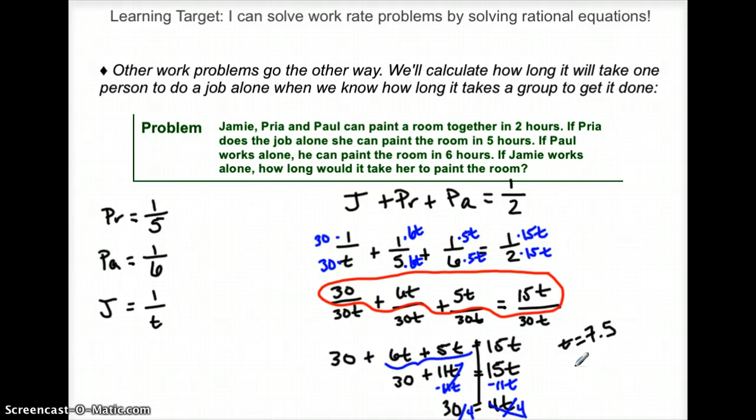So again, we're talking hours. So poor Jamie, she's a little slow. It takes her 7.5 hours, 7 hours and 30 minutes, to paint a room by herself.